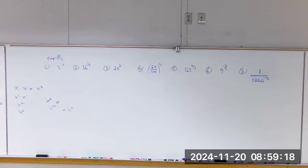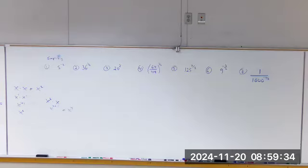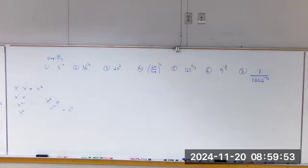Number eight: negative powers mean reciprocal — you flip it, then you do the power. We're not going to do five to the negative two directly; we flip it first. A to the negative n becomes one over a to the positive n, then you do the exponent and simplify if you can. Or if you start with a negative exponent in the denominator — one over a to the negative — you flip it up. A negative exponent means reciprocal: flip it, then apply the exponent.